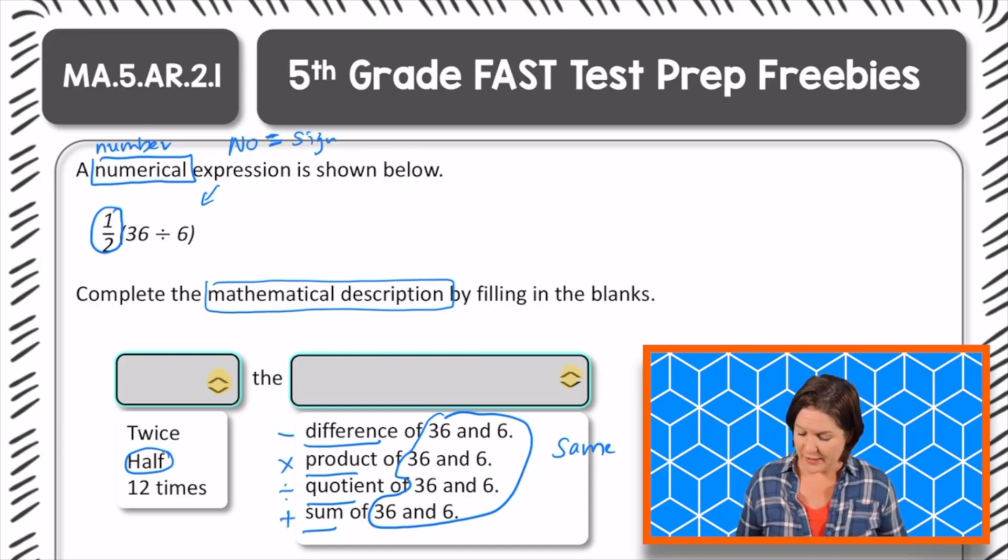Okay, so now that we know that, are we subtracting, multiplying, dividing, or adding 36 and 6 in our numerical expression? We are dividing. So we need to select the one that says the quotient of 36 and 6.